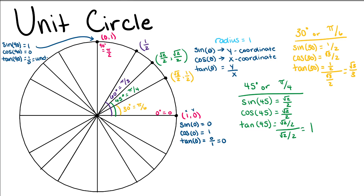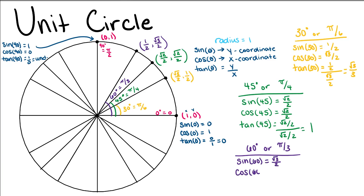Last, we have at 60 degrees — our point is (1/2, √3/2). So the sine of 60 is √3/2, and the tangent of 60 is (√3/2) over (1/2), which is √3.